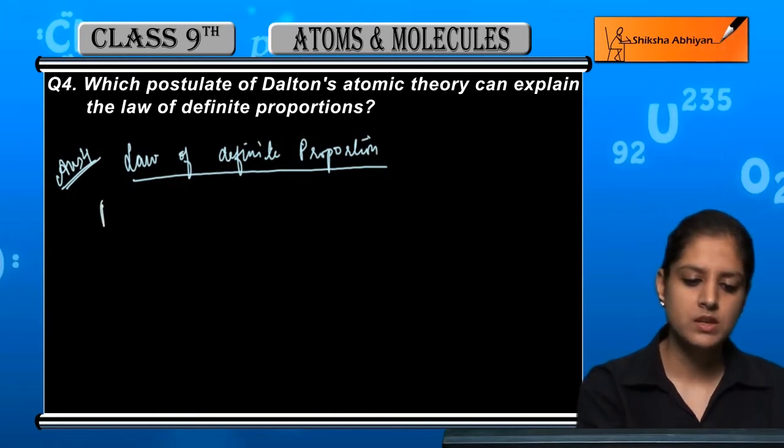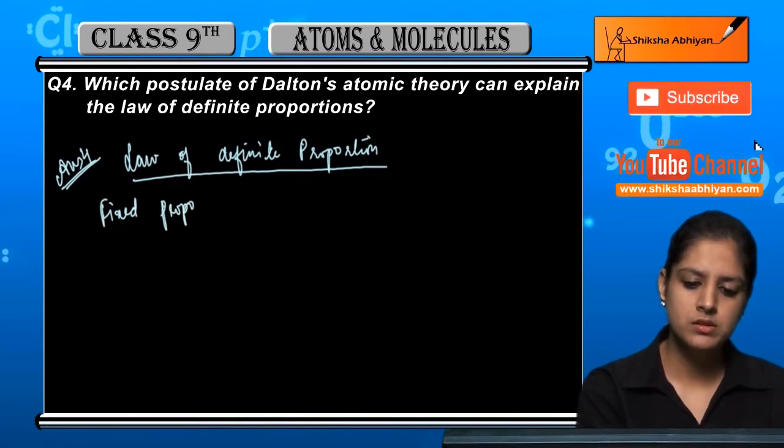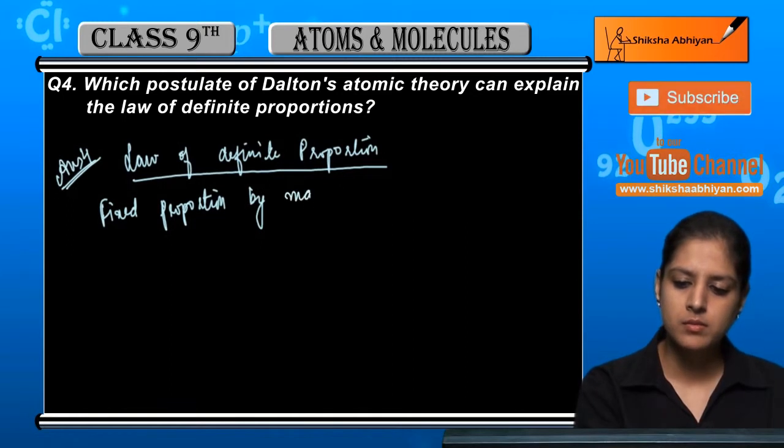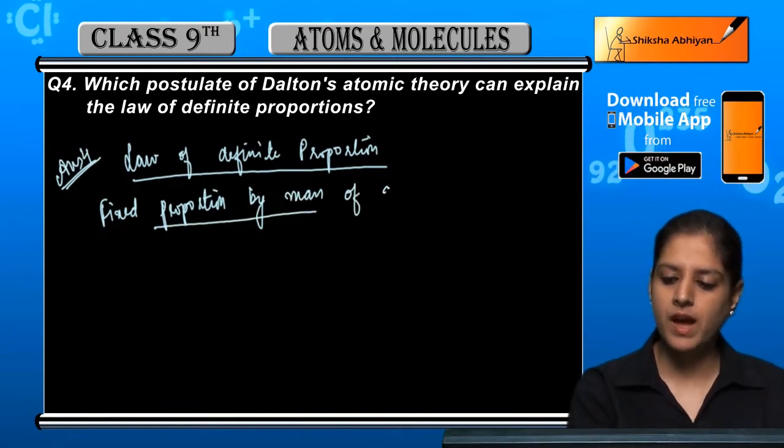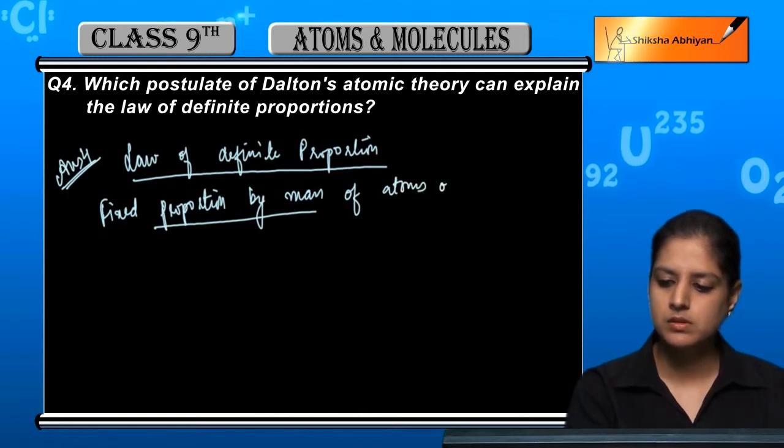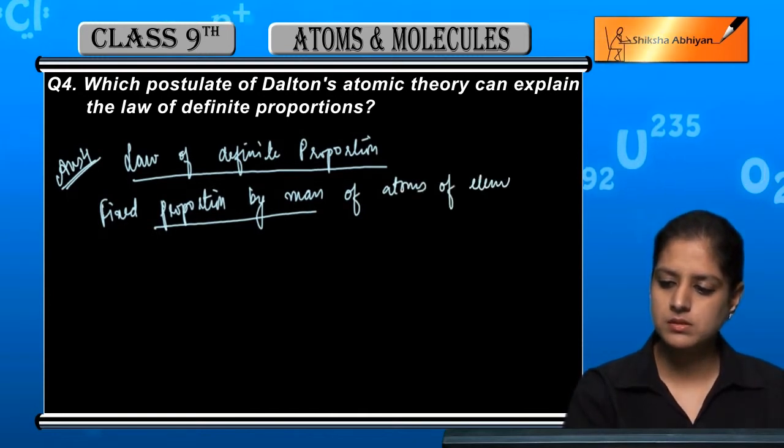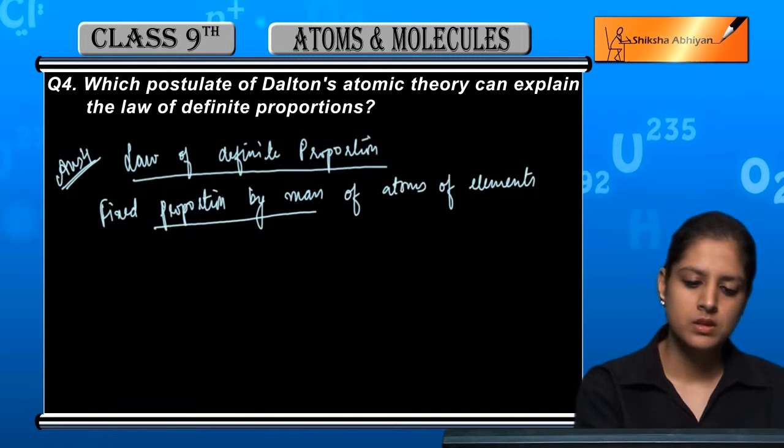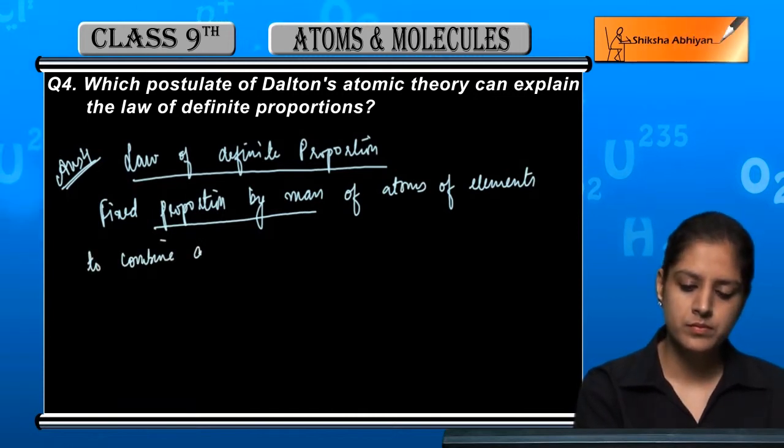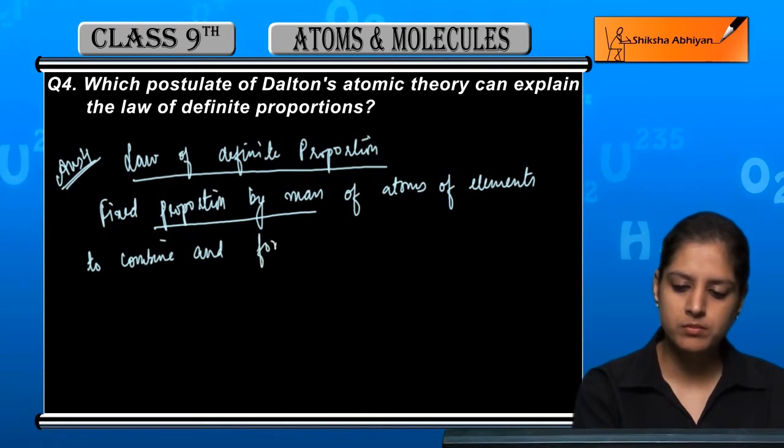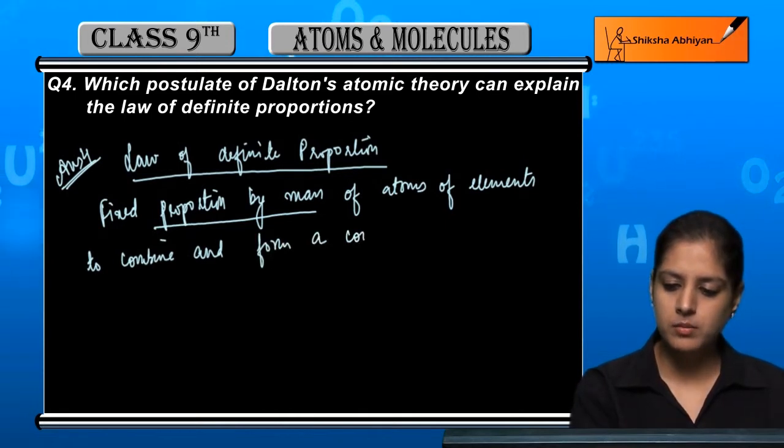ठीक है तो इसके लिए fixed proportion by mass, fixed proportion by mass होती है of atoms of elements to combine and form a compound.